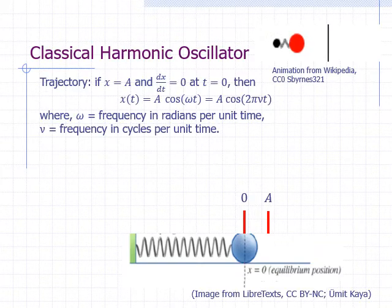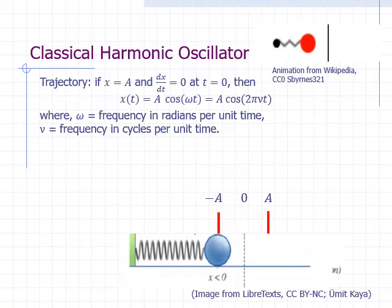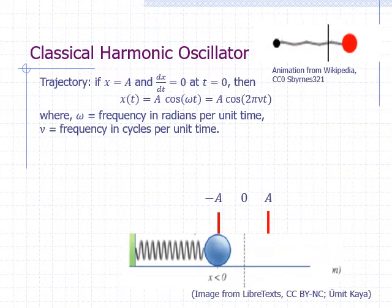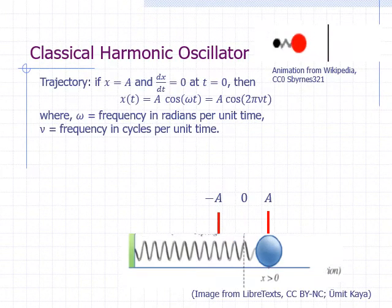Even though there is no force at the equilibrium position, inertia keeps the particle moving past it. However, once it's on the left side, it will start slowing down since it will now experience a force pushing it back toward the equilibrium position. Eventually it will stop when it reaches x equals negative a. At that point, the rightward force will cause the particle to move back towards the equilibrium position. It speeds up until it reaches the equilibrium position, then slows down again and eventually stops when it reaches x equals a. What we have just described is one cycle of motion. This cycle repeats over and over again.